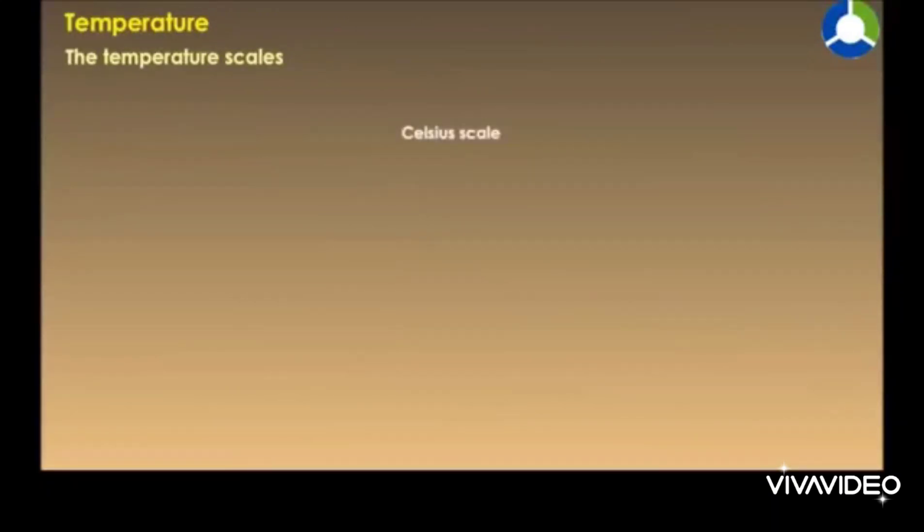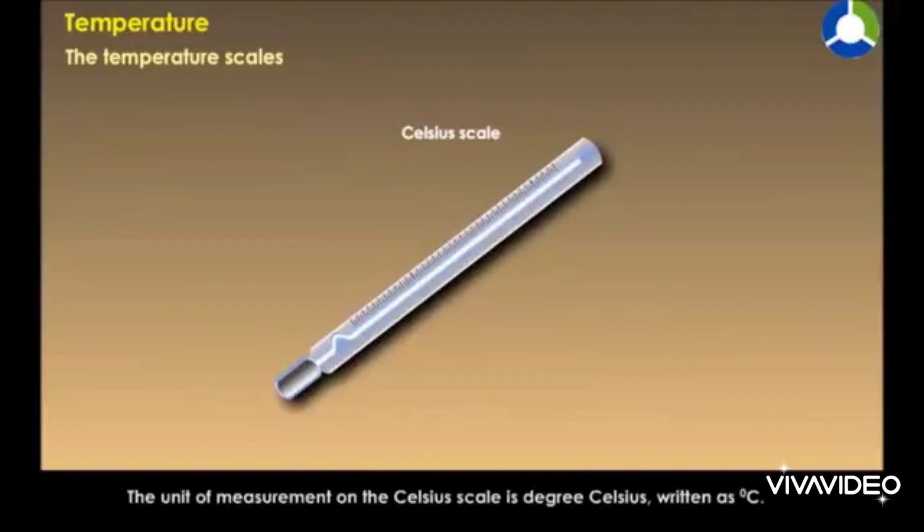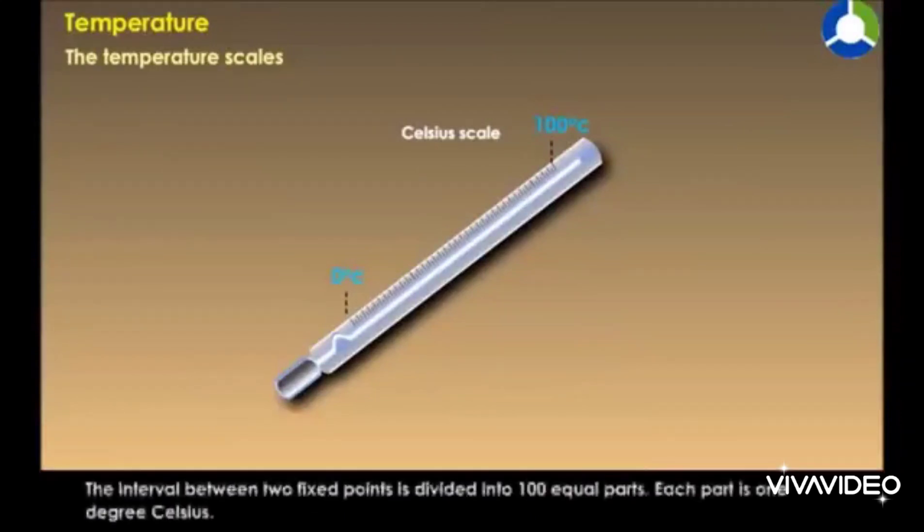And the third is the Kelvin scale. The Celsius scale was introduced by Anders Celsius and is known after his name. On this scale, the ice point is taken as 0 degrees Celsius, and the steam point is marked as 100 degrees Celsius. The interval between the ice point and the steam point is divided into 100 equal parts. Each part is called 1 degree Celsius.